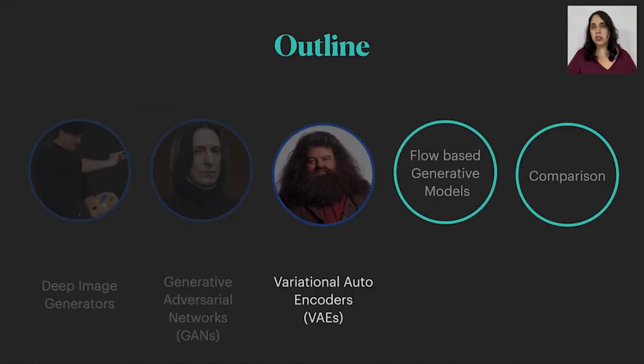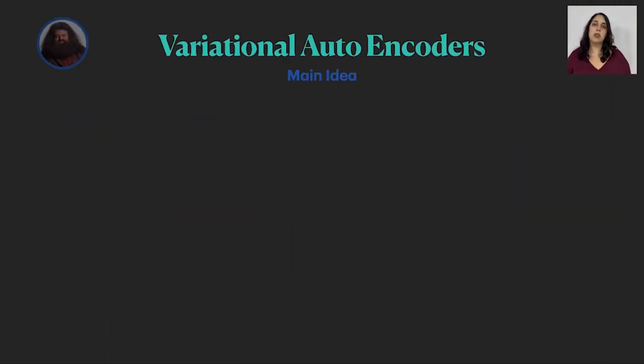Next we have variational autoencoders with a cool teacher. Variational autoencoders also have two components, only this time they work together.